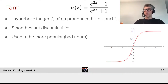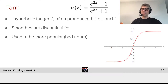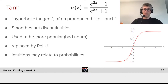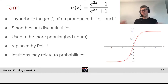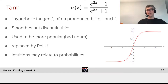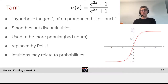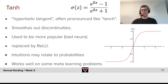It used to be very popular because people believed that it approximates the property of real neurons — that they saturate, that at high firing rate their firing rate can't get any higher. However, the evidence that real neurons actually ever saturate is extremely limited, and it's largely been replaced by ReLU. Intuitions might also relate to probability: since the tanh output spans from minus 1 to 1 and probabilities go from 0 to 1, it's a simple scaling. And there's a smooth transition where evidence makes us believe in one hypothesis versus another. It works well on some meta-learning problems in part because it's nicely multiple times differentiable.